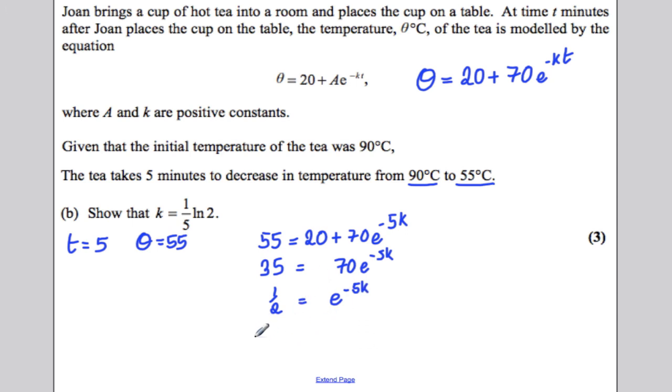Now, we can take natural logarithms of both sides. So, ln of a half is equal to negative 5K. Therefore, K is equal to negative one-fifth ln of a half, dividing both sides by negative 5.